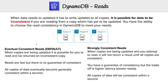The first option is an eventual consistent read, which is the default functionality. When copies are being updated, it is possible for you to read and be returned an inconsistent copy. The trade off is that reads are fast but there's no guarantee of consistency. All copies of data will eventually become consistent within a second, so you could be reading it before it's updated, but generally it will be up to date.